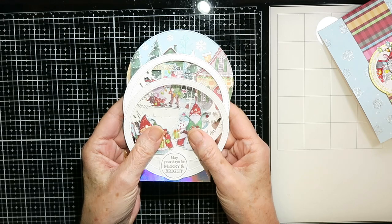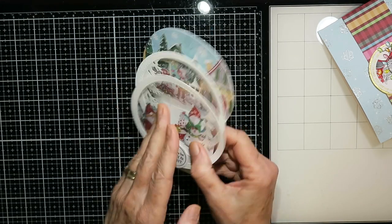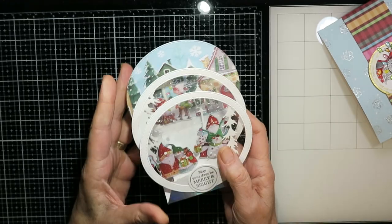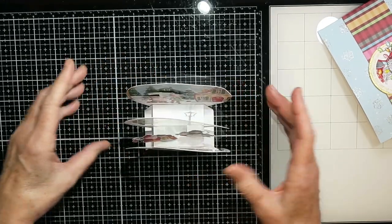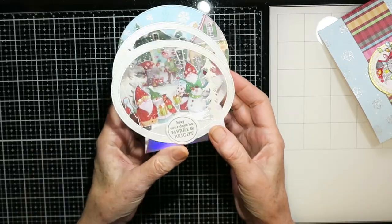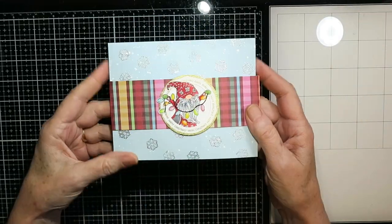Now this is a snow globe and it folds down flat. You can write your message on the back. But it's really an interesting design with that acetate. So I will have a video showing you how to make that one soon.